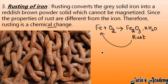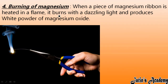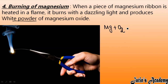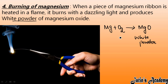Next we are having burning of magnesium. You take a small ribbon of magnesium and burn it in a flame. After some time you will observe it burns with a dazzling white light, and when the magnesium ribbon fully burns it produces a white powder. When magnesium reacts with oxygen in the presence of flame, it forms magnesium oxide — a white powder. The properties of this white powder are completely different from that of magnesium. We cannot convert the white powder back into magnesium ribbon, so it is an irreversible change and a chemical change.